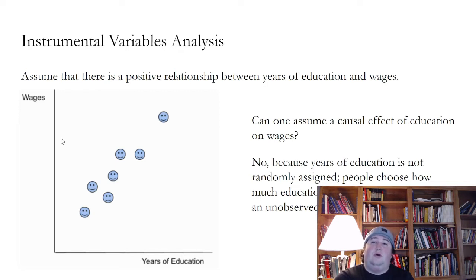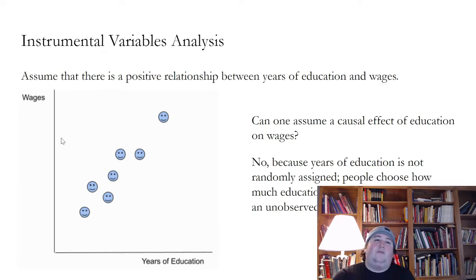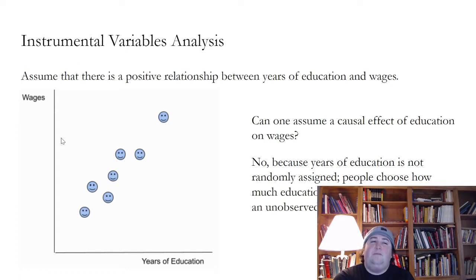The answer is no. We cannot just assume that, because years of education is not randomly assigned. People choose how much education they receive, and there may be an unobserved confounder. You can choose to go to school through high school, you can choose to go to college, you can choose to go to graduate school. People with greater academic abilities probably tend to stay in school a little longer.